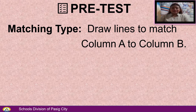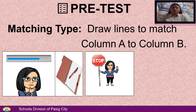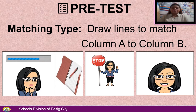Let's identify your prior knowledge for today's lesson. Matching type. Draw lines to match column A to column B. Get your notebook to write your answer. Don't hesitate to stop or pause the video to get time to think. Remember to play the video again to check your answer.